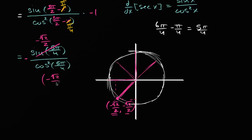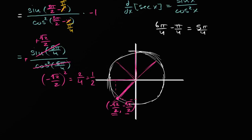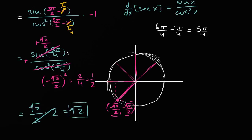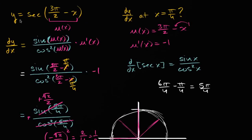It's going to be that squared. Squaring negative square root of two over two: it becomes positive, square root of two squared is two, and two squared is four — so it's one half. The denominator is equal to one half. The numerator's negative cancels out with that negative one. So we are left with square root of two over two divided by one half, which is the same as multiplying by two. We are left with positive square root of two, which is the slope of the tangent line to the graph of y equals secant of three pi over two minus x, when x is equal to pi over four.